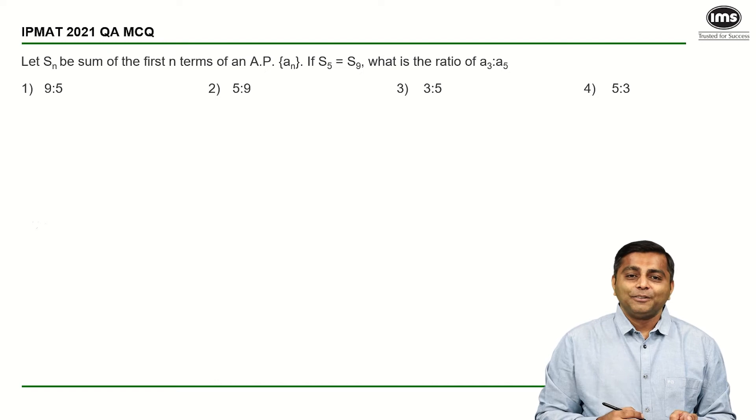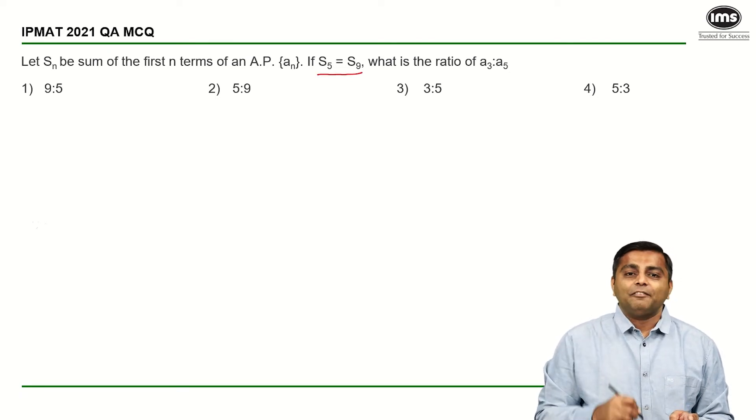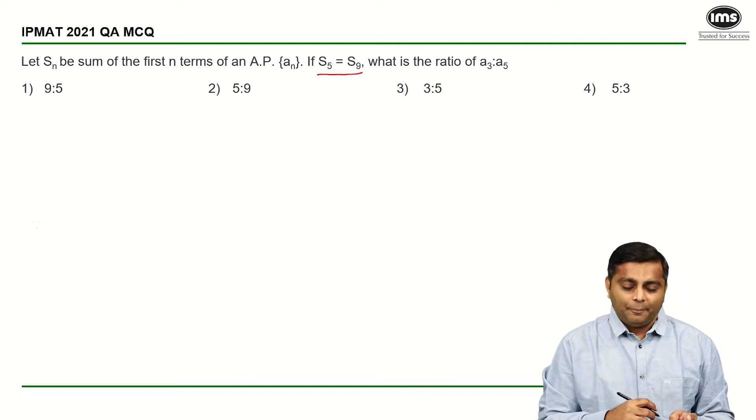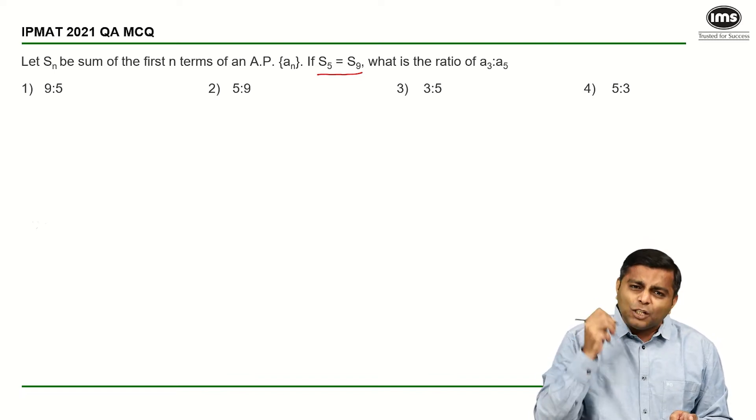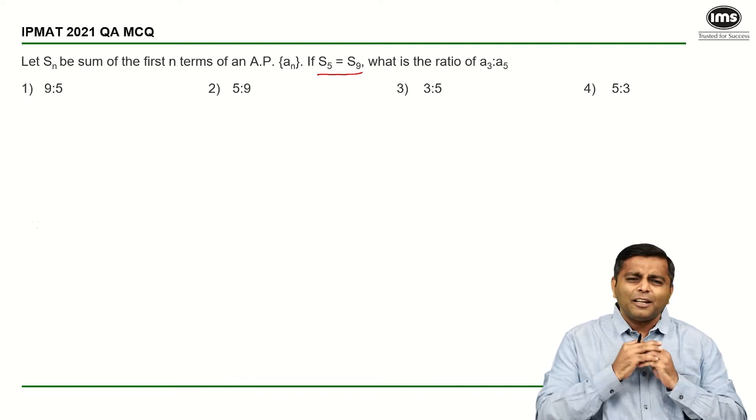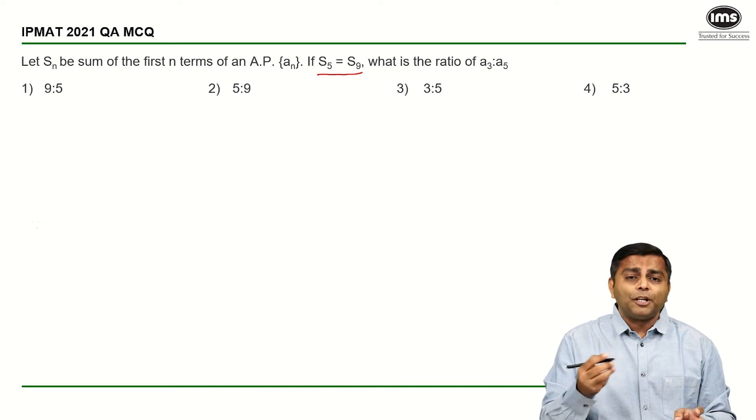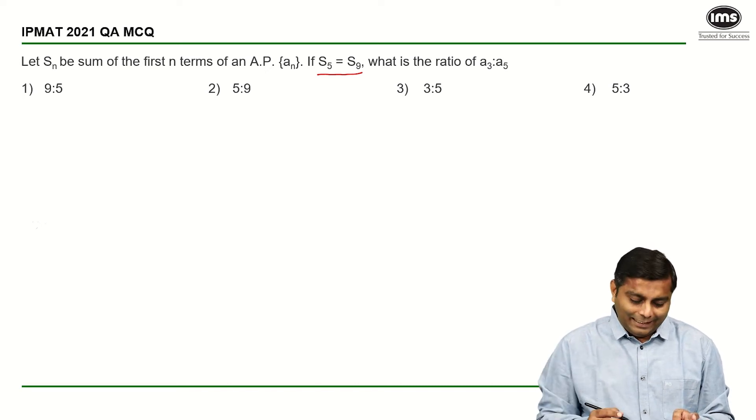Okay, so let's start with the solution. What have they given? They've given S₅ is equal to S₉. We need to find out A₃ is to A₅. The summation of the five terms is equal to summation of the first 9 terms is what they have said. Nothing extraordinary, just applying the formulas that you should already be knowing.